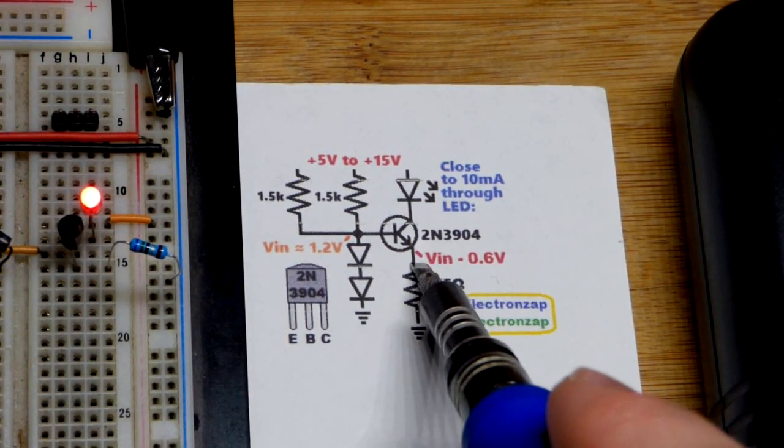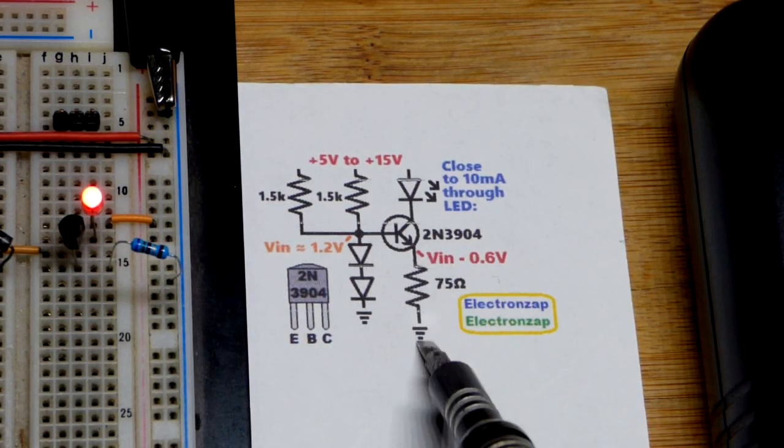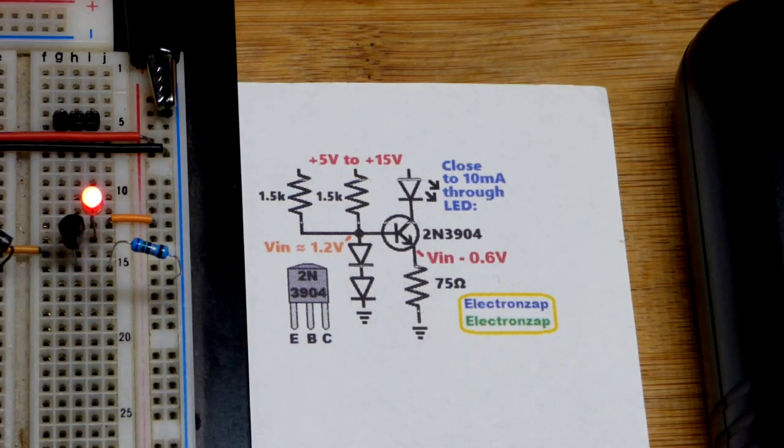But in any case, what it's going to do, it's going to set about 0.6 volts less across the resistor there because you've got the base to emitter drop. And then that value of the resistor will set the current.